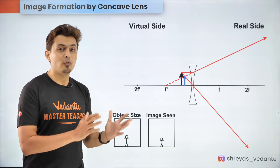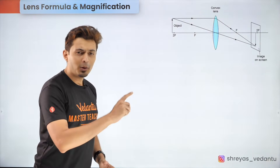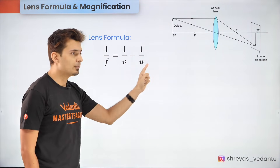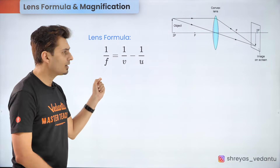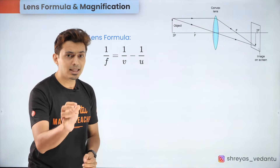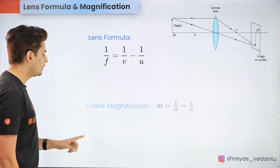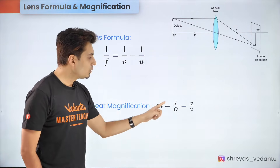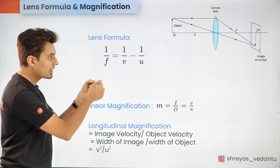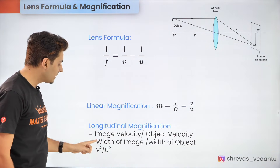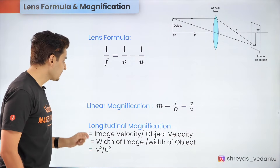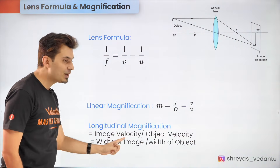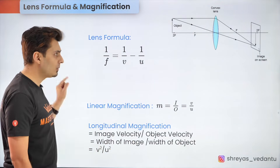To find the location and nature of the image mathematically, use the lens formula: 1/f = 1/v − 1/u, where v is the image distance and u is the object distance with proper sign convention. Notice this formula is similar to the mirror formula, just with a minus sign instead of a plus. The magnification along the perpendicular direction is image height/object height = v/u — notice the minus sign is missing compared to the mirror formula. The magnification along the principal axis is v²/u², which equals the width of the image upon the width of the object, and also equals image velocity upon object velocity — useful for solving motion-related problems.